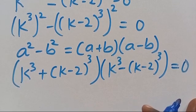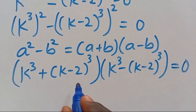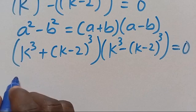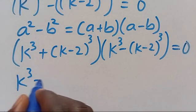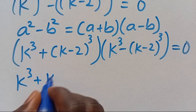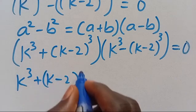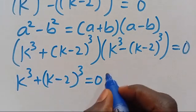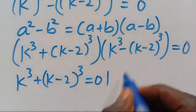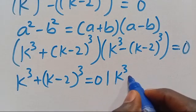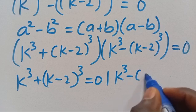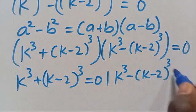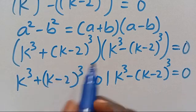For this expression to equal 0, either we have K to the power of 3 plus K minus 2 in parentheses to the power of 3 equals 0, or we have K to the power of 3 minus K minus 2 in parentheses to the power of 3 equals 0.